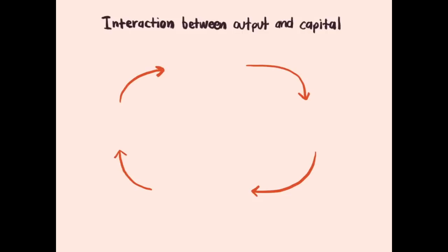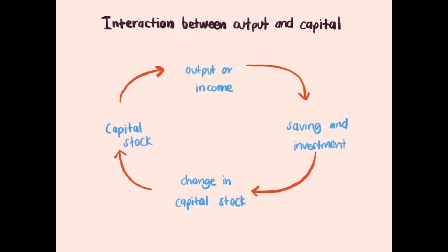Interaction between output and capital: the amount of capital determines the amount of output being produced, and the amount of output determines the amount of saving, and so the amount of capital being accumulated.